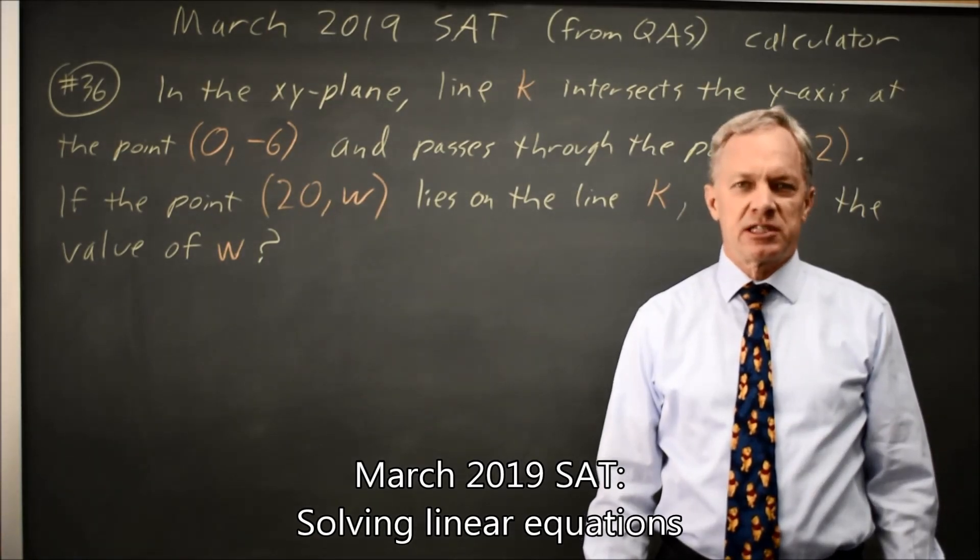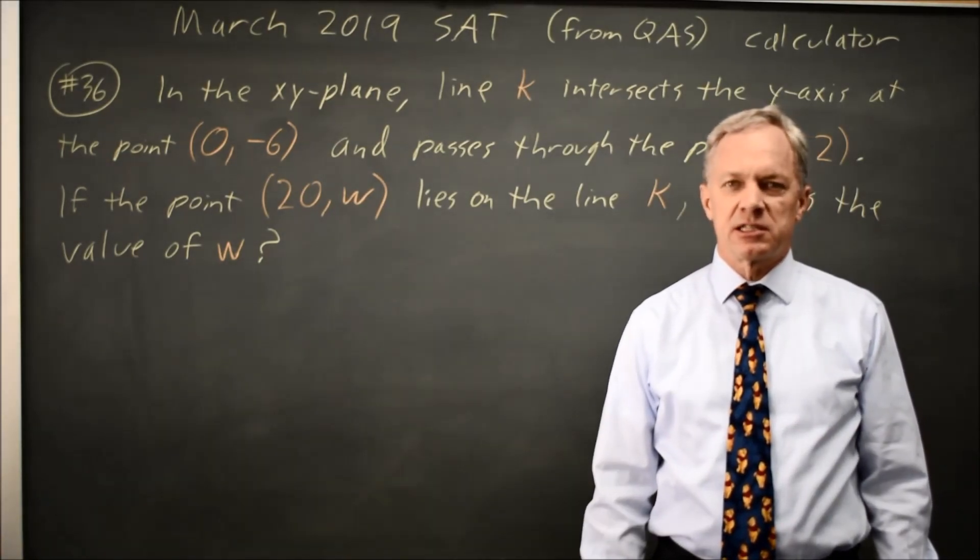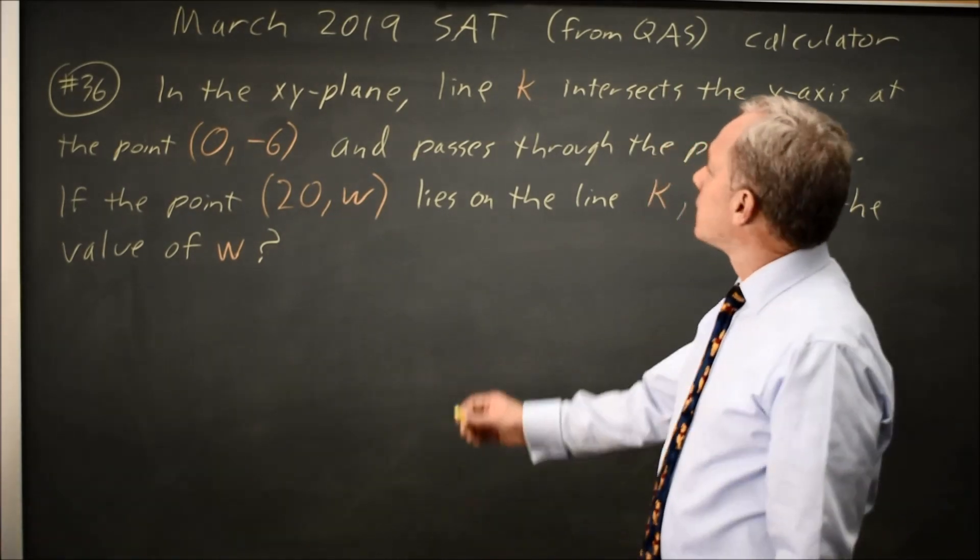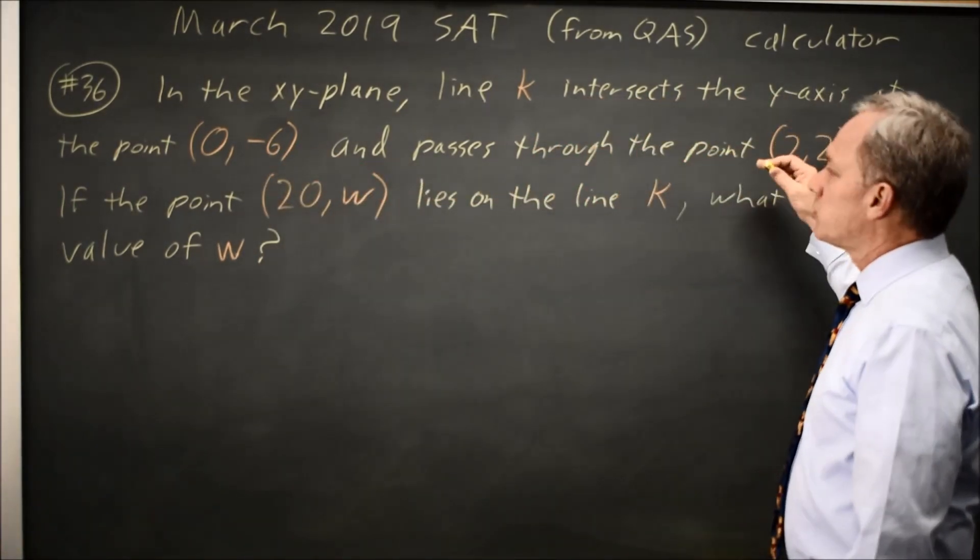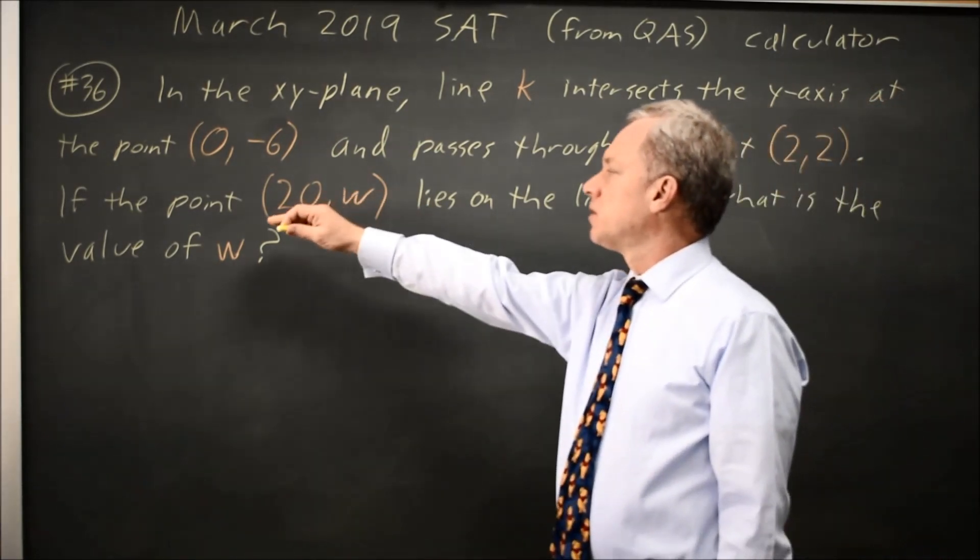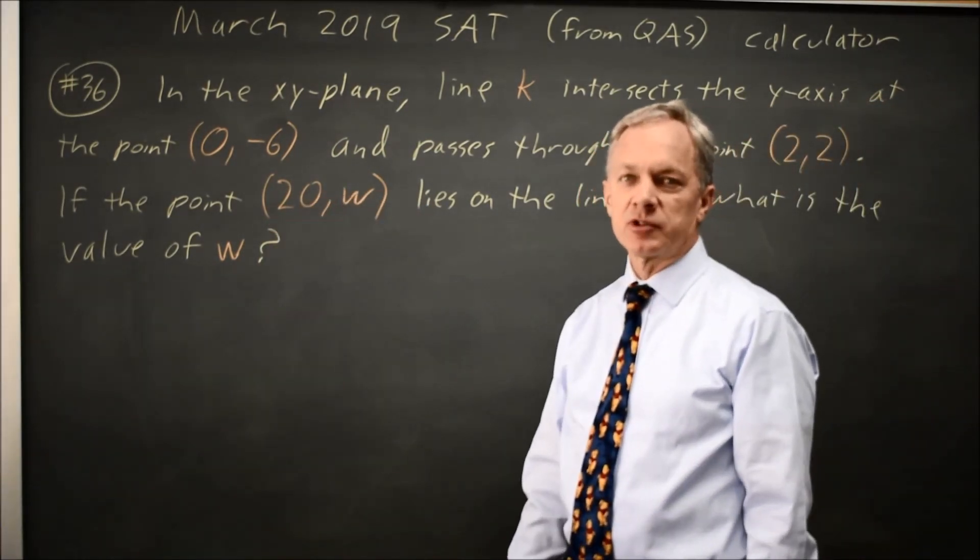This is calculator question number 36 from the March 2019 SAT. College Board asks about a line that contains the point (0, -6) and the point (2, 2) and they want to know the y coordinate of the point on the line that has an x coordinate of 20.